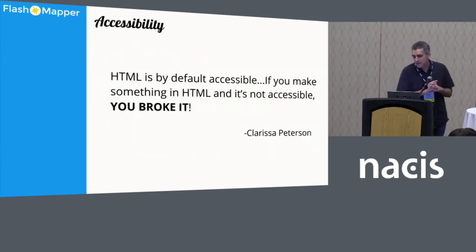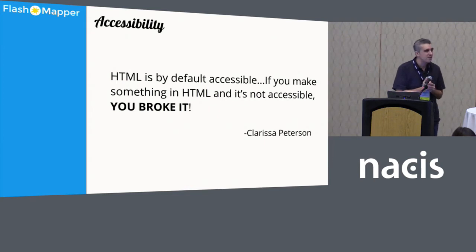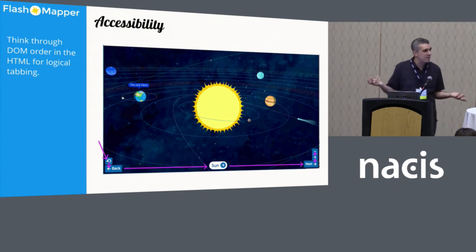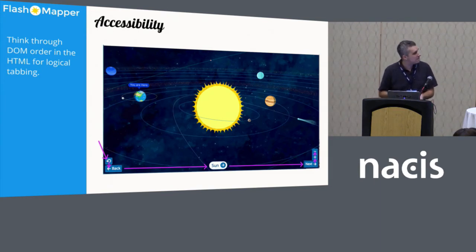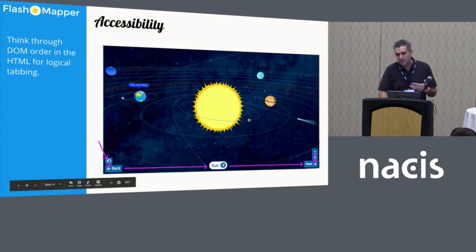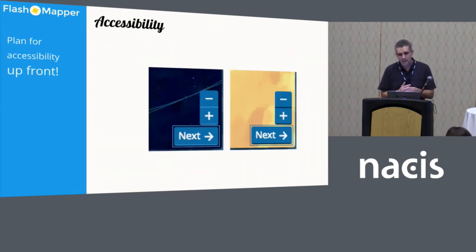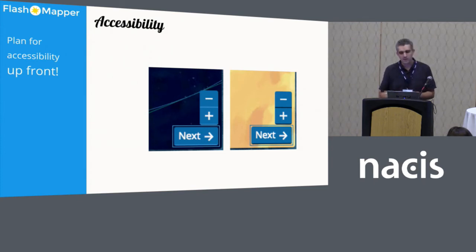Accessibility. A UX accessibility presenter I saw once, Clarissa Peterson, had a great line: HTML is by default accessible. If you make something in HTML and it's not accessible, you broke it — it's supposed to be accessible, it's in the spec. Think about somebody who has to use a keyboard — they can tab logically through it. Make sure buttons are there for as much of the functionality as you can, and that people can get to all your content using just a keyboard. Plan for it up front. We used to try and build focus states at the end and it always looked weird and messy, so make that part of the initial design effort: what's the focus state going to look like, do we have enough contrast?